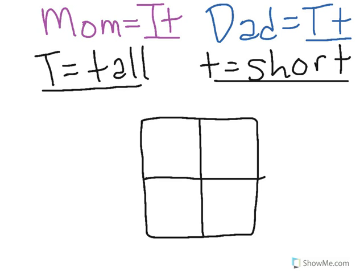So first, we put one of the parents' alleles across the top of our Punnett square. This is the dad's heterozygous genes. And then we can put the mom across the side. She's also heterozygous, like I said before.